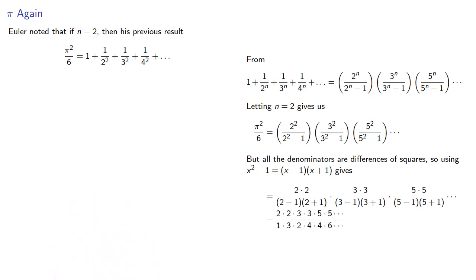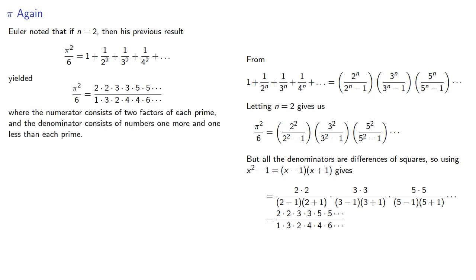And so pi squared over 6 can be expressed as a product where the numerator consists of two factors of each prime and the denominator consists of numbers one more and one less than each prime.